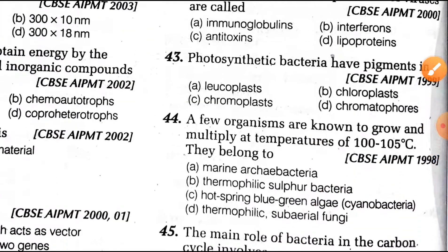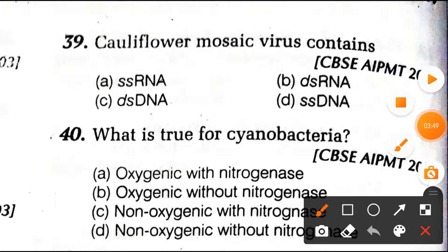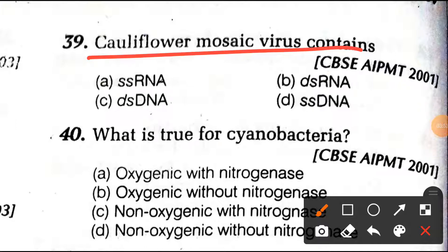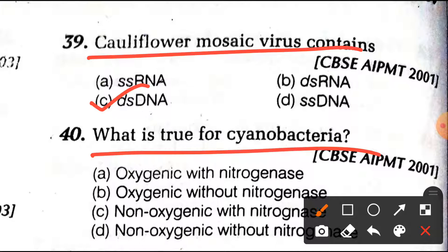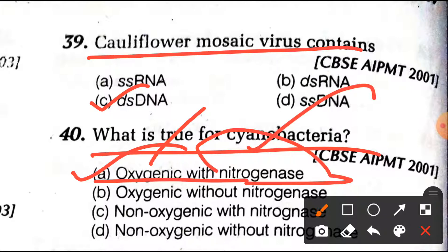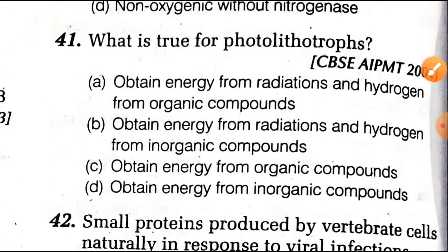Question number 39: what is true for cyanobacteria? Cyanobacteria are blue-green bacteria, also called blue-green algae. The right answer is that they perform photosynthesis which includes oxygen production, and they also fix atmospheric nitrogen.